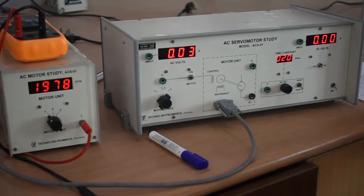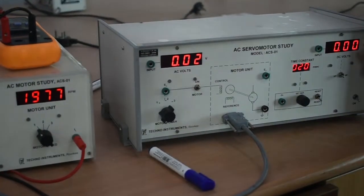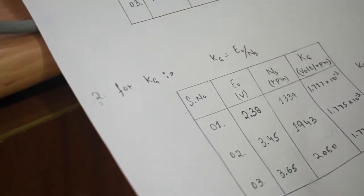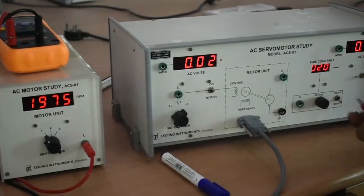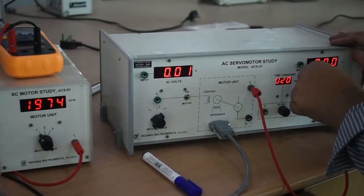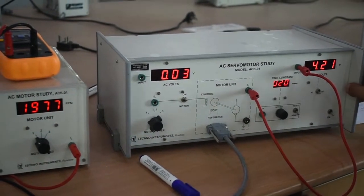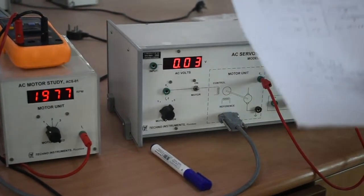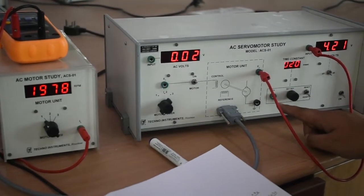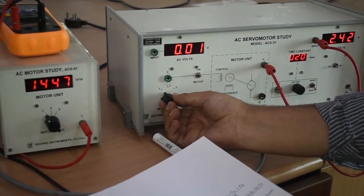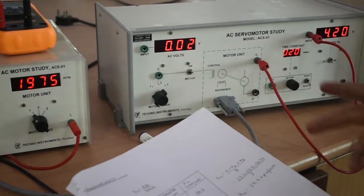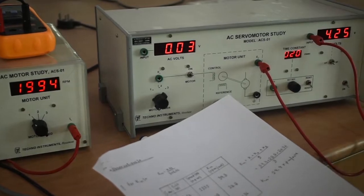To find the second parameter Kn, first calculate the generator constant Kg = E₀ / Ns, where E₀ is the output voltage and Ns is the speed. Repeat this for step one, step two, and step three, then take the mean. Kg comes out to approximately 1.77 × 10⁻³ volts per rpm.